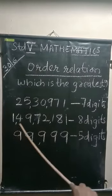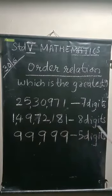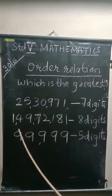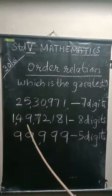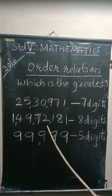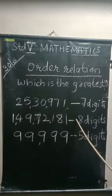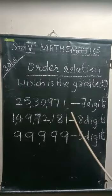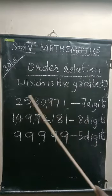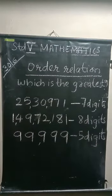Yes. Which number has more digits? Yes. This number has more digits. And we can say 1,49,72,181 is the greatest number of the three given numbers.